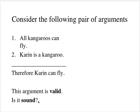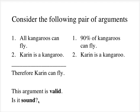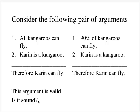I want to compare this with an inductive argument that is very similar. What if the argument was: 90% of kangaroos can fly. Karin is a kangaroo. Therefore, Karin can fly. So this is a strong argument. If 90% of kangaroos could fly and if I was a kangaroo, then it would be a pretty good bet that I could fly. It's possible that I might not be able to — I might be one of that sad 10% that can't fly — but it's more likely than not that I can fly. So it's strong.